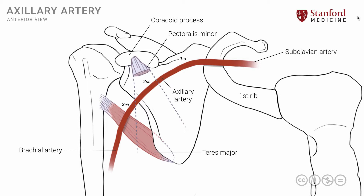There are branches from each part of the axillary artery, but I'm only going to highlight a few branches from the third part that have the highest level of clinical significance. One of those branches is known as the subscapular artery, seen here coming out from the third part. It has further subdivisions that go to the scapular area, as well as more distally into the chest wall area.